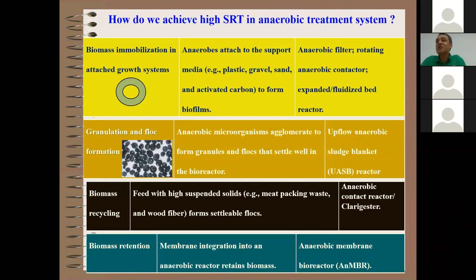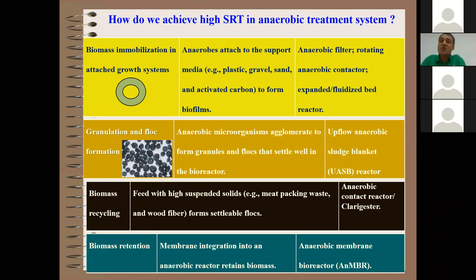The first technique to maintain long SRT is biomass immobilization. We use different types of attached growth media — plastic media, sand, gravel, activated carbon, rubber beads — as biocarriers to allow microbes to grow on surfaces and form biofilms, thereby retaining high biomass concentrations in the reactor regardless of HRT. Examples include anaerobic filters (upflow or downflow), rotating anaerobic contactors, and expanded and fluidized bed reactors.